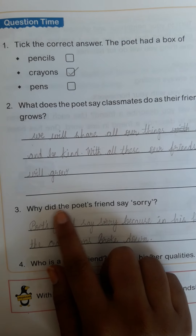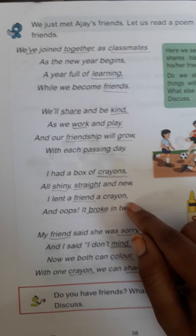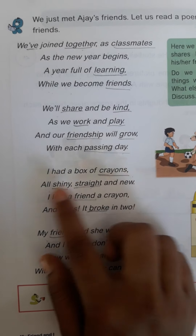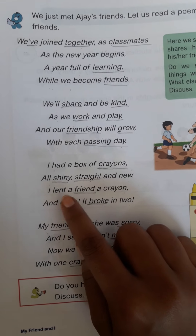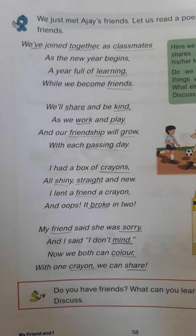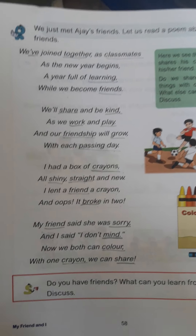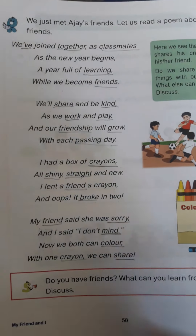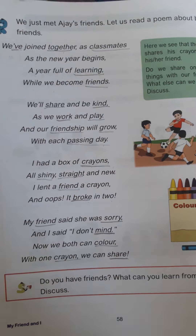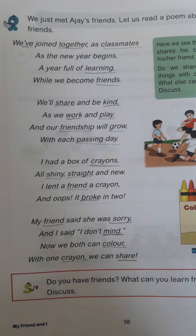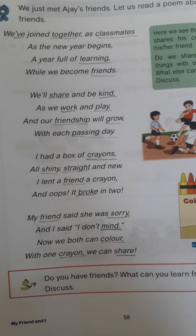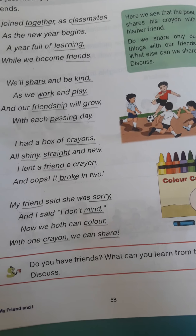Next, third question C: Why did the poet's friend say sorry? See children — the poet's friend is saying sorry. Why is she saying sorry? See in the third stanza: 'I had a box of crayons all shiny and straight and new.' The poet lent a friend a crayon, and oops — it broke into two. That means the crayon broke, and then the friend said she was sorry.